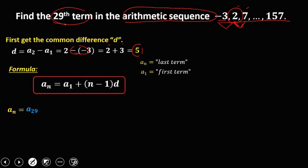Then a sub 1 is the first term. On the given, the first term is negative 3, so a sub 1 is negative 3. Then n is the term of a sub n.